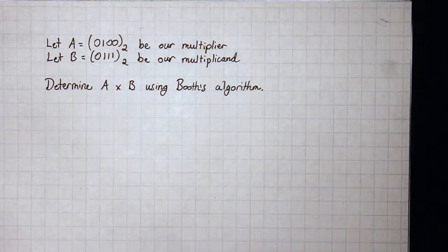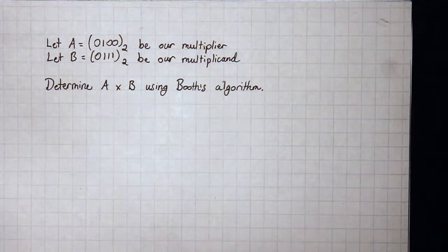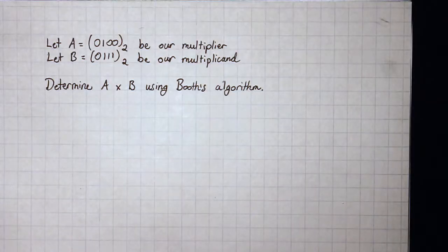Hey everyone, in this video we're going to learn how to multiply two binary numbers using Booth's algorithm. There are multiple multiplication algorithms that we can use, but Booth's algorithm is by far the most efficient in this class because it avoids unnecessary adds and subtractions.